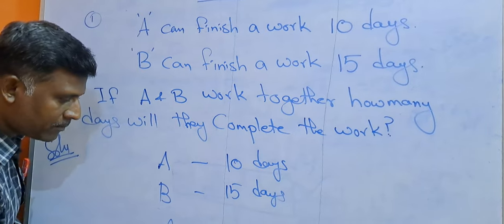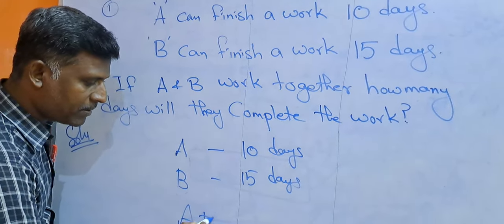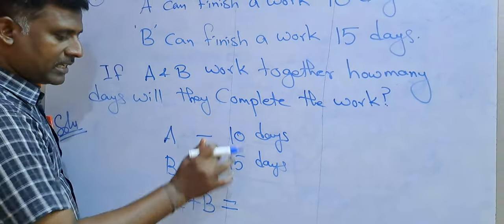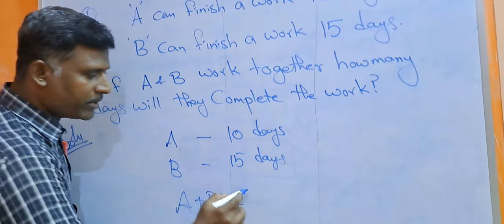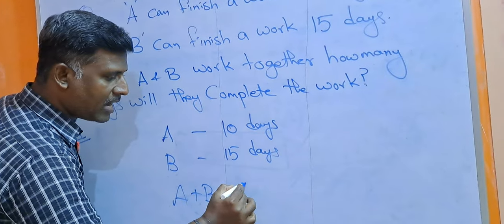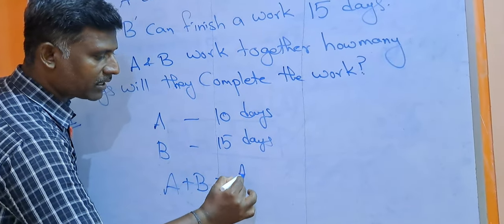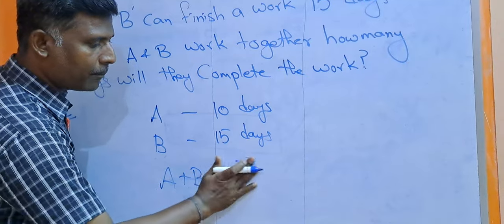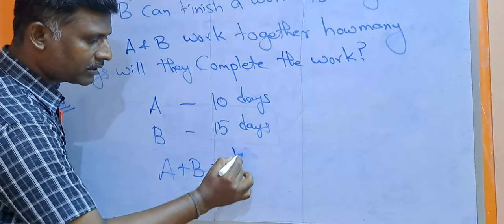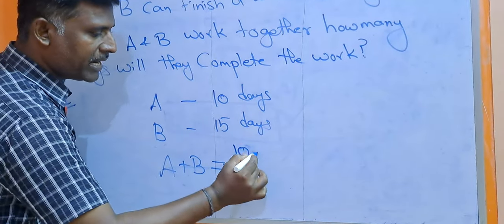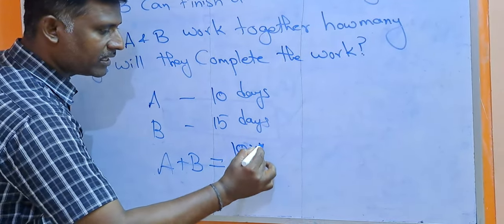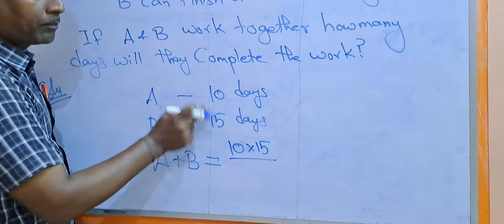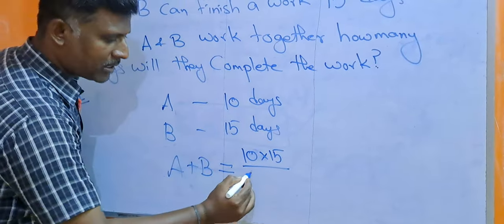Now, A plus B — A plus B is the same one. First, in the numerator, A and B multiplication — A into B work. A and one candidate will be 10 days, B and one candidate will be 15 days — multiplication. In the denominator, you can add two pairs: 10 plus 15.